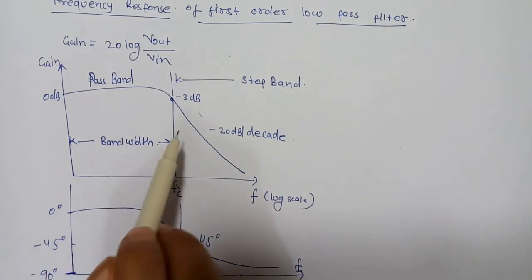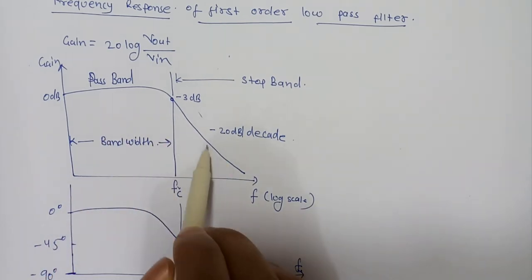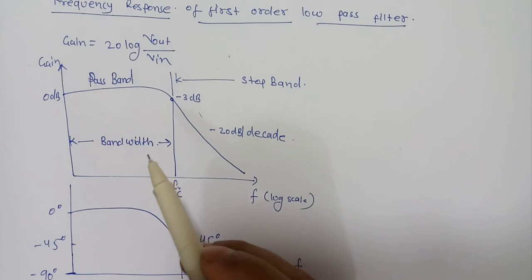Any high frequency signal applied to the low pass filter circuit above this cutoff frequency point will become greatly attenuated, that is they rapidly decrease. This happens because at very high frequency the reactance of the capacitor becomes so low that it gives the effect of a short circuit condition on the output terminal, resulting in zero output.